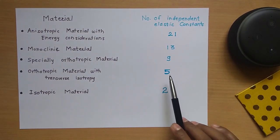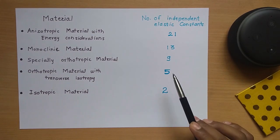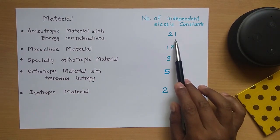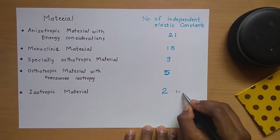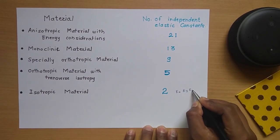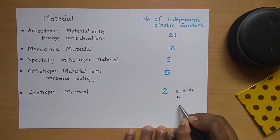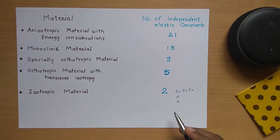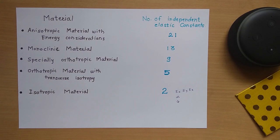Actually we need 81 constants, but due to the symmetry of the stiffness matrix, we can calculate those constants, so the maximum we need is 21. These constants include Young's modulus in the X direction, Young's modulus in the Y direction, Young's modulus in the Z direction, similarly Poisson's ratio in these different directions, and shear modulus (modulus of rigidity) in the different directions. So we have understood about the materials and the material constants today.